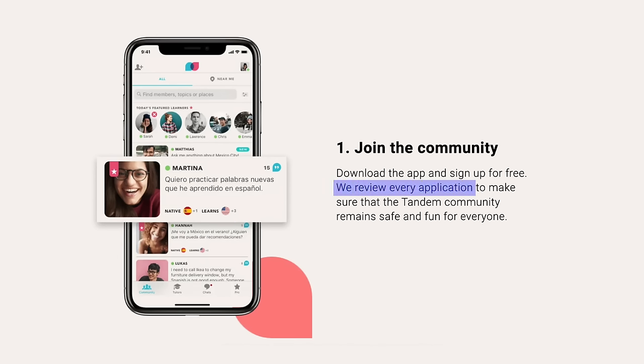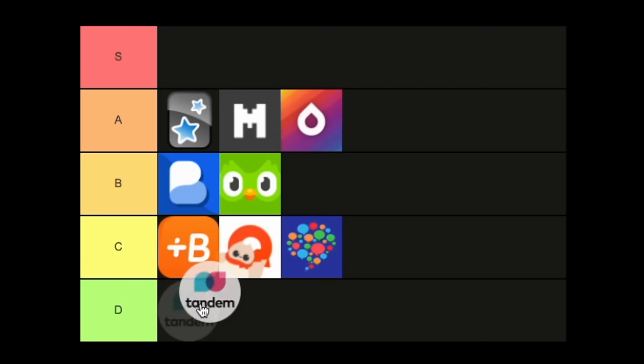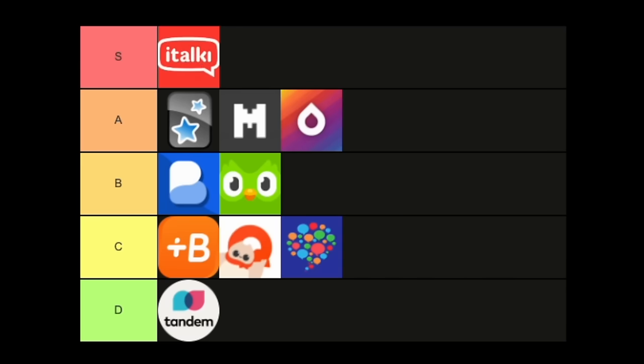Tandem is very similar — a language exchange app. One pro is that language exchange partners tend to be more serious because you have to submit a profile that gets manually accepted. But I'm putting that as a big con too, because while it ensures quality partners, it prevents a lot of people from using the app. I also haven't personally used it and don't hear many amazing reviews about it, so combined with that barrier to entry, it gets a harsh ranking.